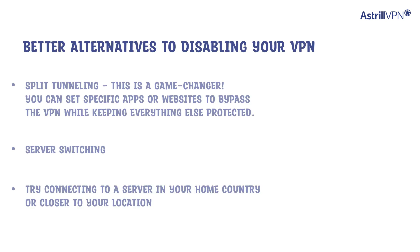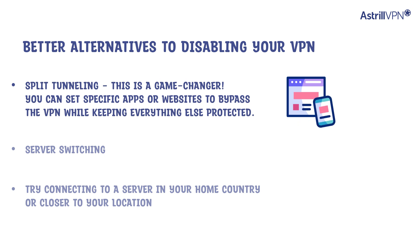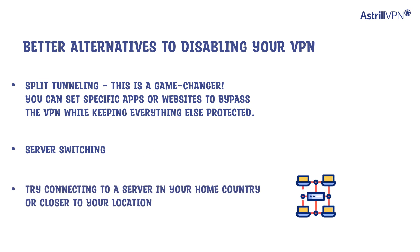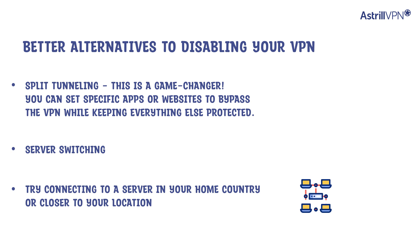Before you completely turn off your VPN, consider these smarter alternatives. Split tunneling is a game changer — you can set specific apps or websites to bypass the VPN while keeping everything else protected. Server switching is another option: try connecting to a server in your home country or closer to your location to improve speeds while maintaining protection.